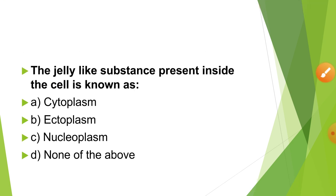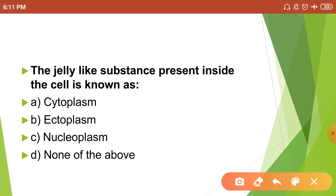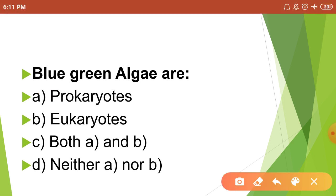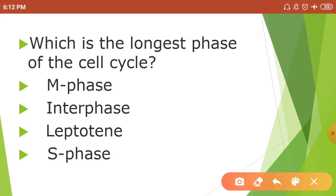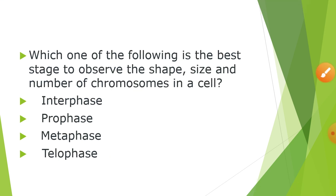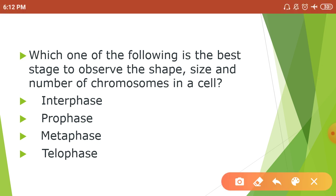The jelly-like substance present inside the cell is known as? Which is the longest phase of the cell cycle? Which of the following is the best stage to observe the shape, size, and number of chromosomes in a cell?